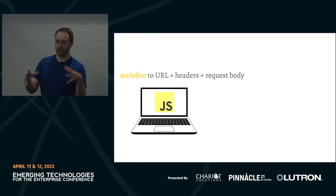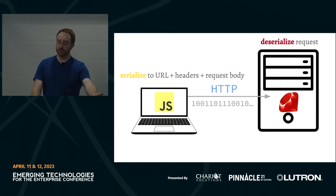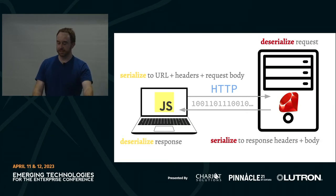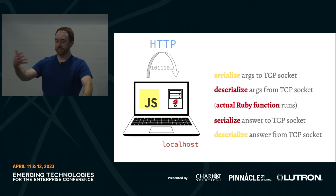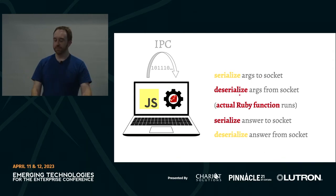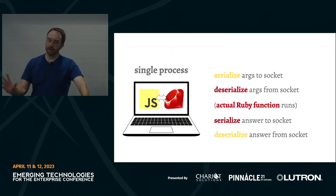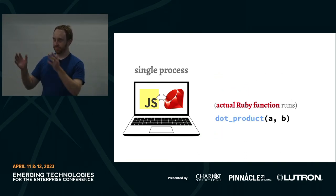To summarize where we've gotten: we started by serializing JavaScript arrays to URL plus headers plus request body, sending over the network, deserializing on the Ruby side, and sending back a serialized response. Then we peeled back layers — talking over HTTP to localhost, using TCP sockets, and then upgrading to inter-process communication over a non-TCP socket with binary encoding instead of JSON. But what we really want is a single-process solution — calling a Ruby function just like it's a JavaScript function, with no IPC, no serialization, nothing.